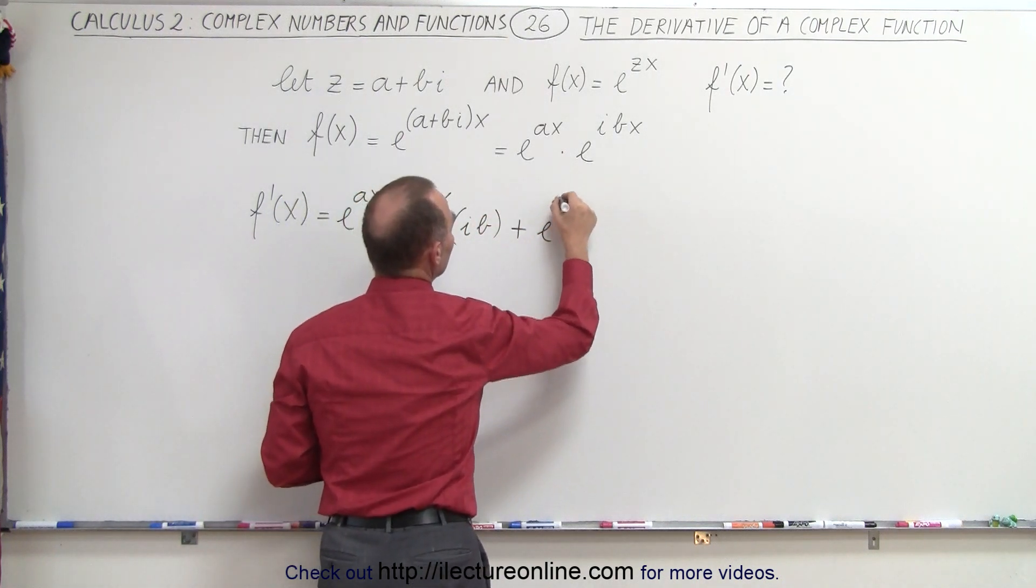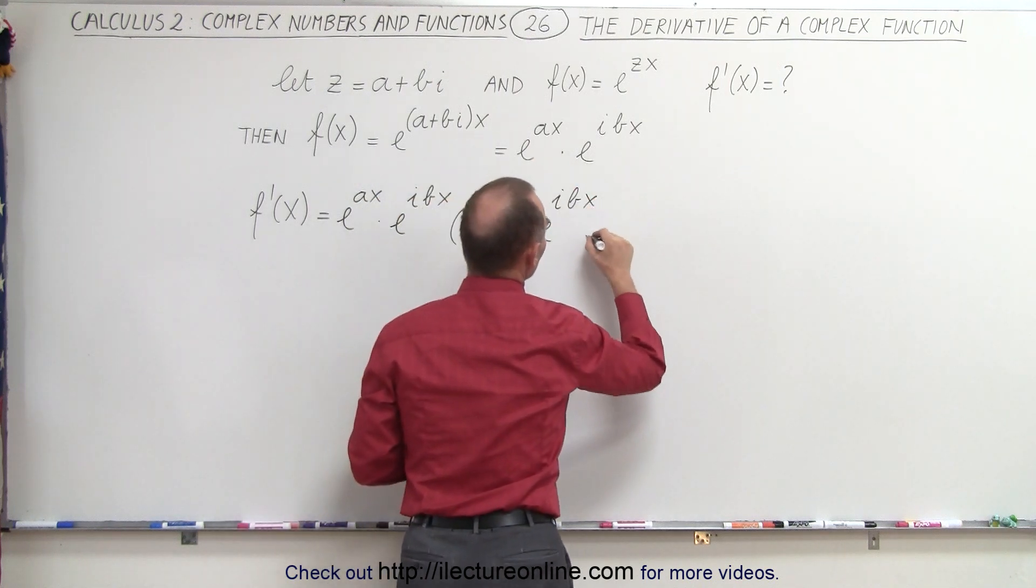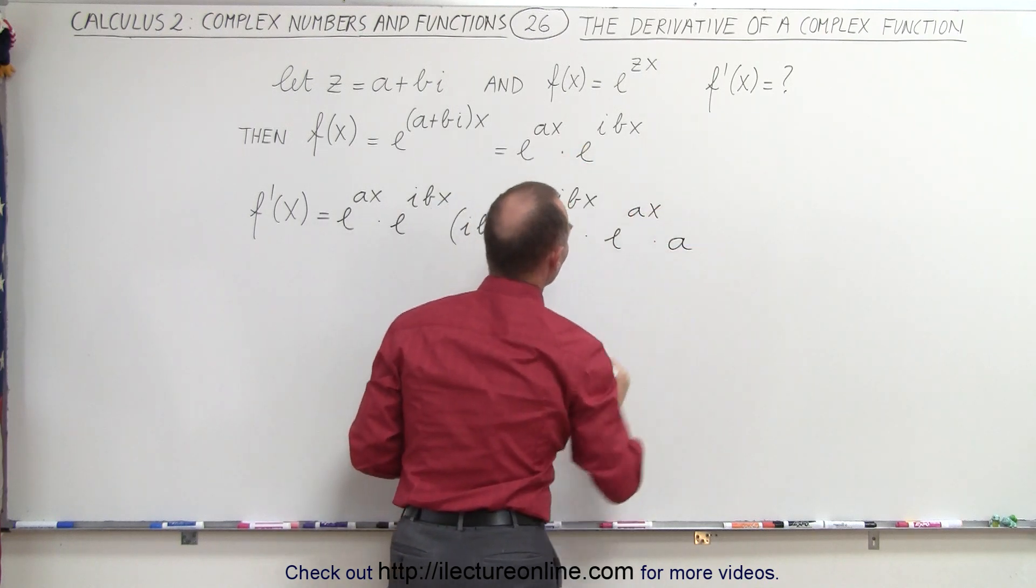plus the second, e to the ibx, times the derivative of the first, which is e to the ax, times the derivative of the exponent, which is times a.